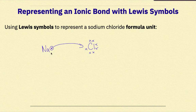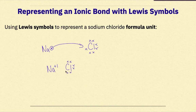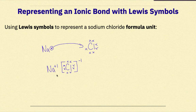As a result, the sodium atom becomes a sodium ion with a charge of Na+1. The chlorine atom gains that 1 valence electron and becomes a chlorine ion, Cl with 8 valence electrons in brackets, with an overall charge of -1. We can see this positive-negative electrostatic force of attraction between the cation and the anion.